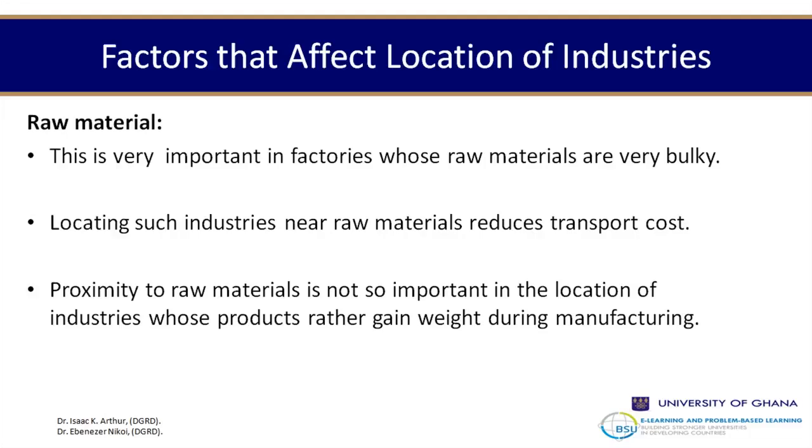Proximity to raw material is less important today due to improvements in transportation. However, some industries locate close to the market when their products generate a lot of weight at the end of production. Breweries, for example, use a lot of water and their output becomes very heavy, so transporting finished products to a distant market would be very expensive — they tend to locate close to the market instead.